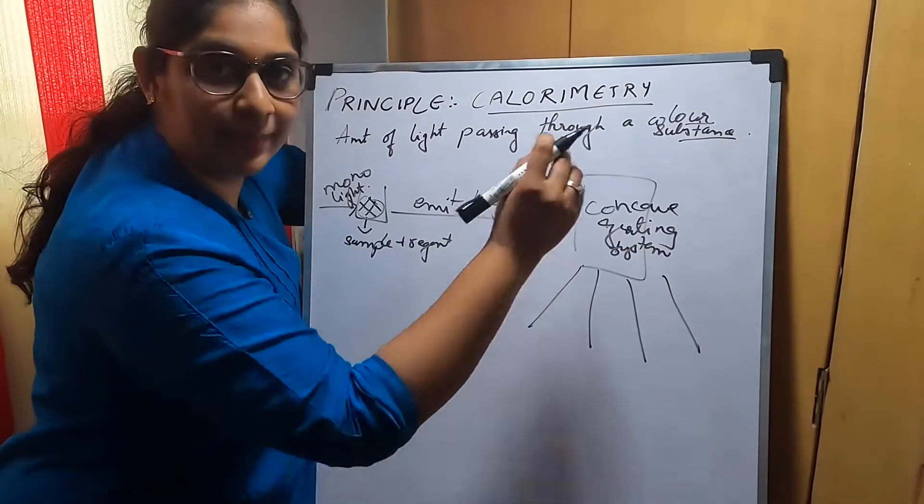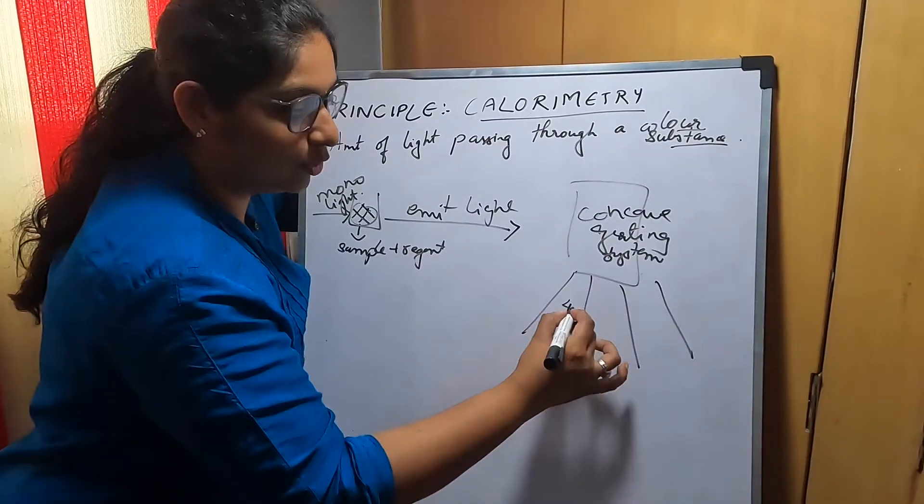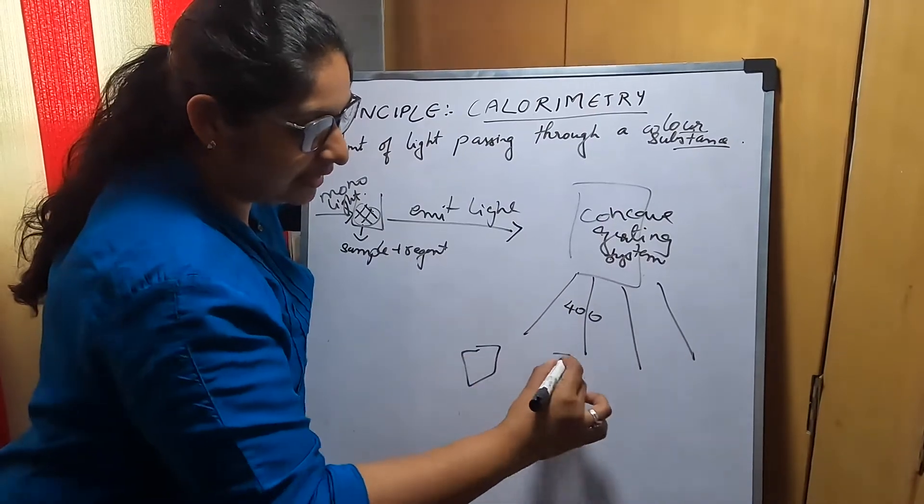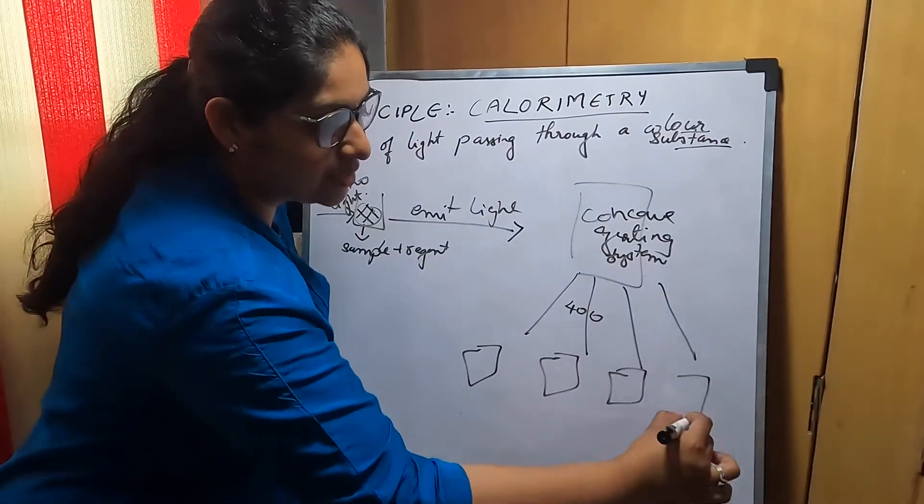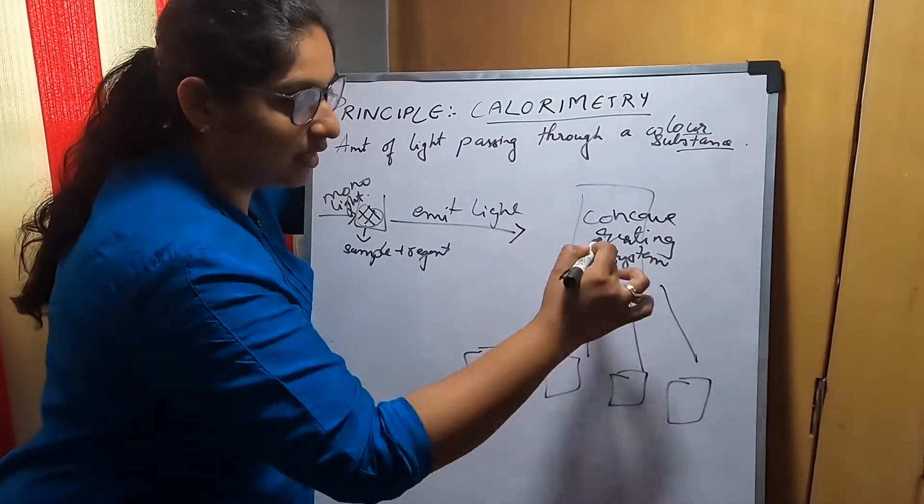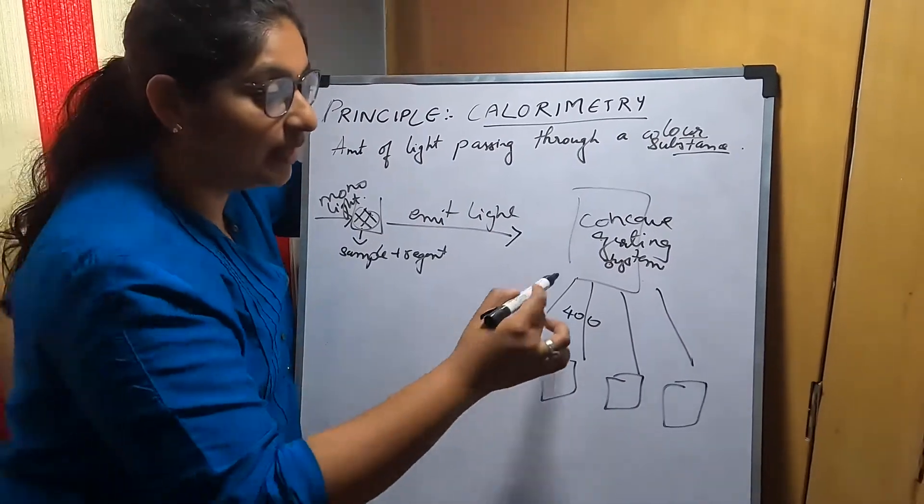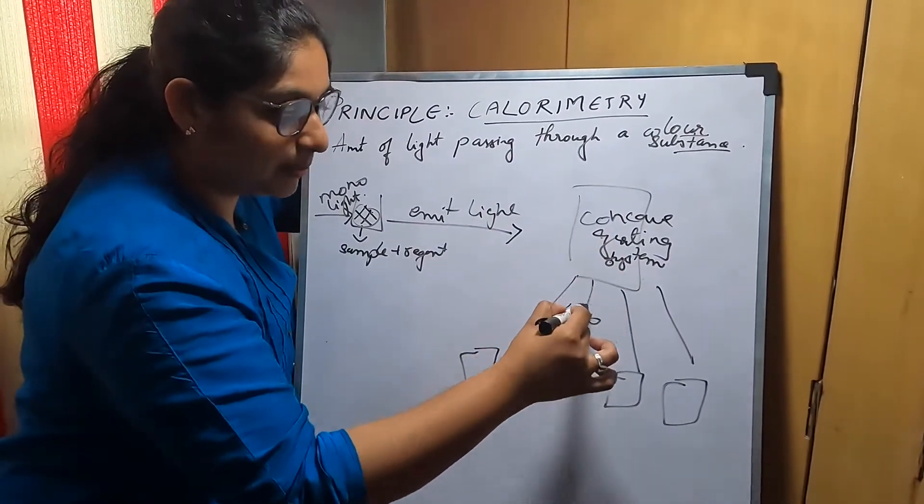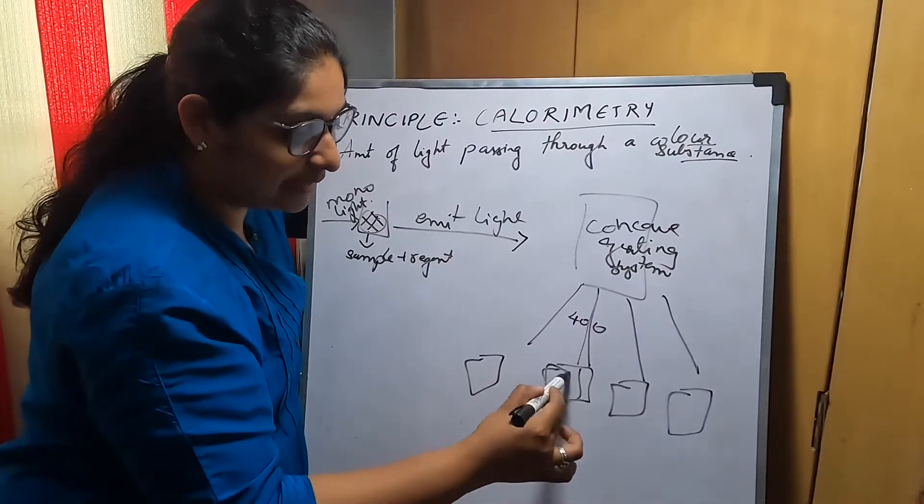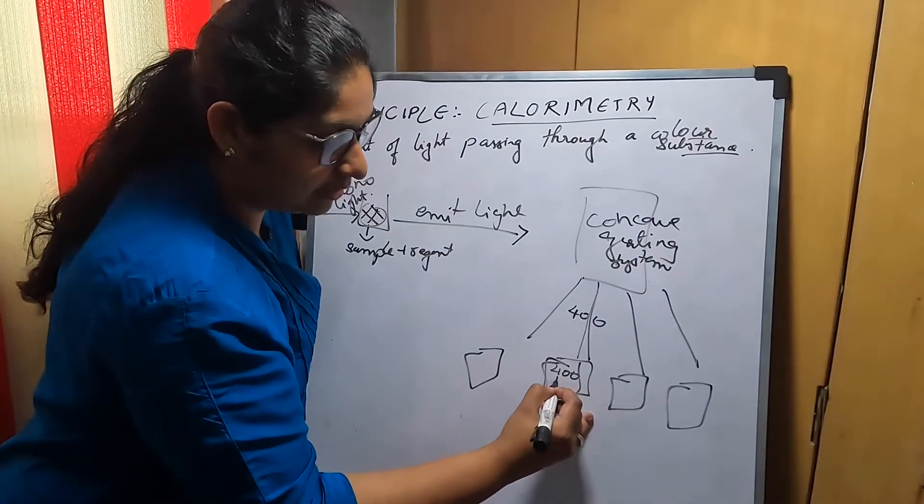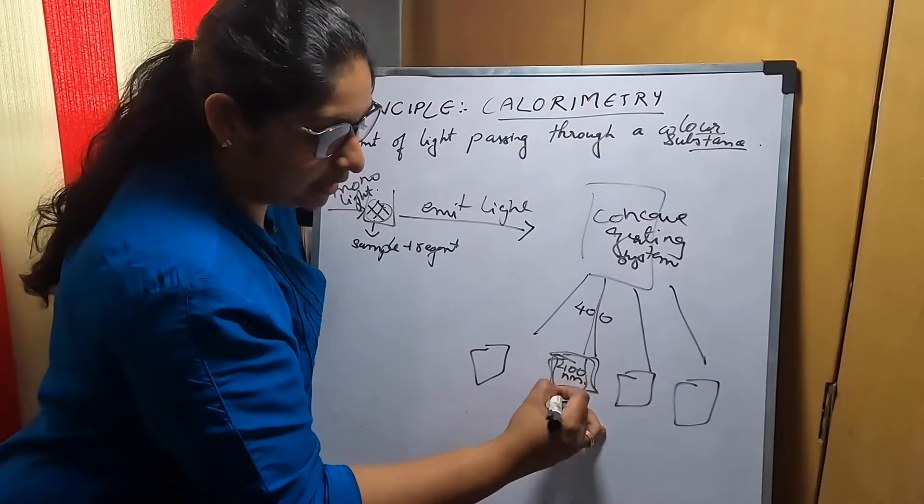Suppose it is coming at a wavelength of around 400 nanometers. There will be various detectors for different wavelengths. If the wavelength is 400 nanometers from the grating system, it will pass on to the detector having a 400 nanometer wavelength.